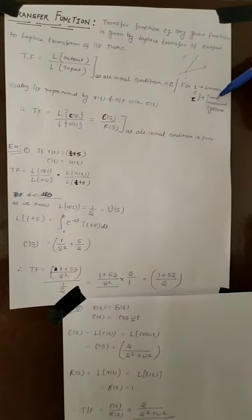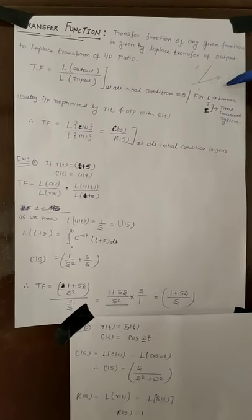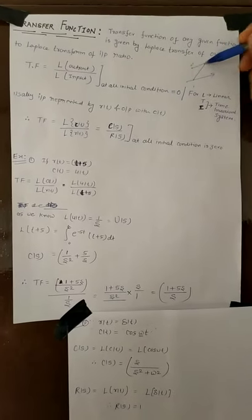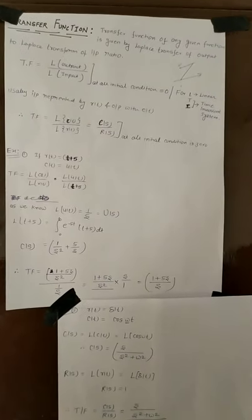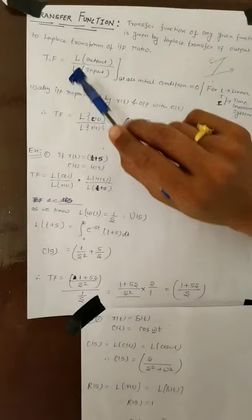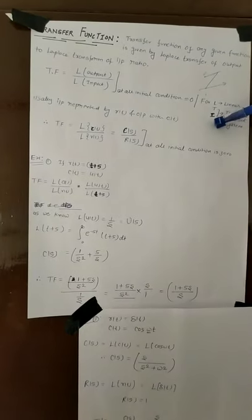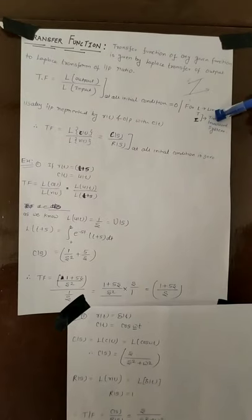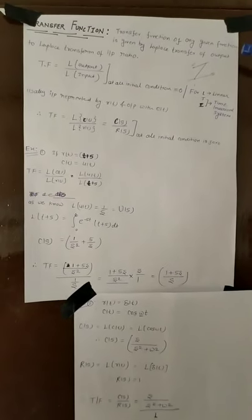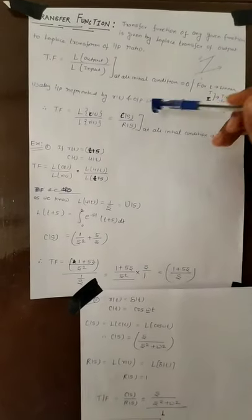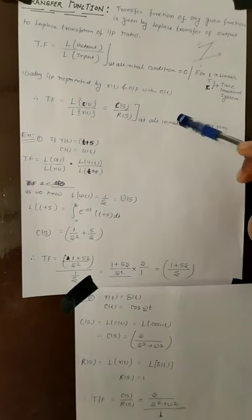A time-invariant system means the system parameters are constant with respect to time — if you draw a graph over time, you get a constant line. These are called time-invariant systems. The LTI system stands for linear time-invariant system. When we take the ratio of input to output, we get the transfer function.